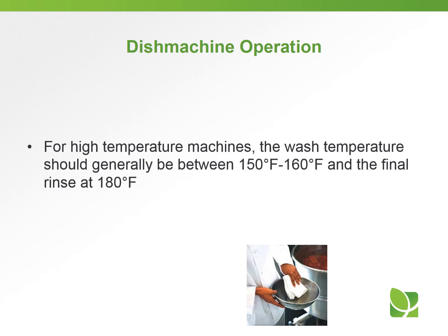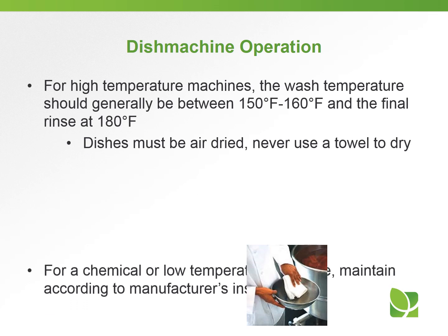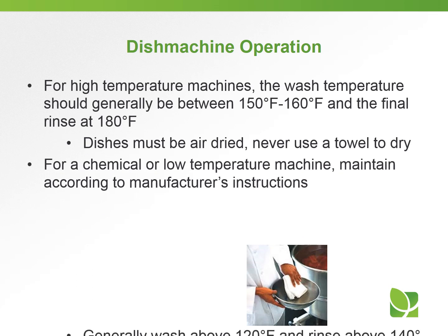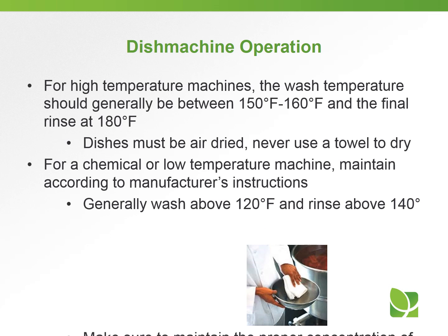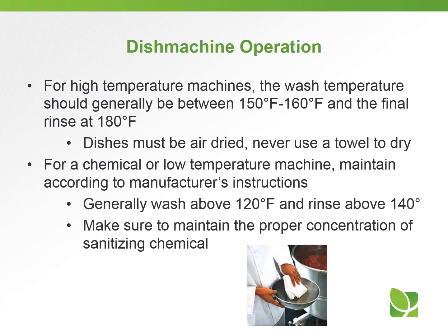For dish machine operation, a high-temperature machine wash temperature should generally be about 150 to 160 degrees, and the final rinse should be 180 degrees. Dishes must be air dried — never use a towel, as that causes contamination. For a chemical or low-temperature machine, follow the manufacturer's instructions. Generally the wash temperature is above 120°F and rinse above 140°F. Make sure the proper concentration of sanitizing chemical is being used.